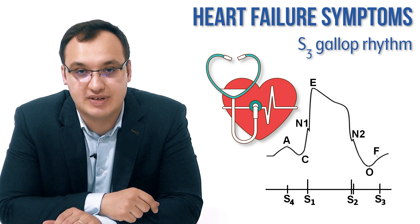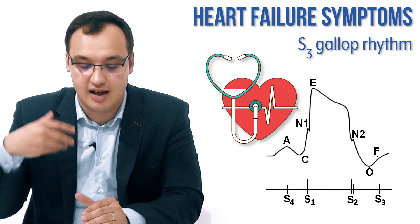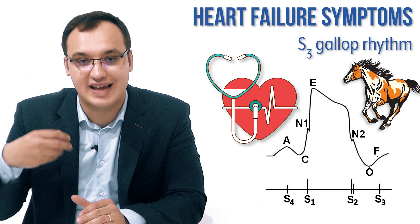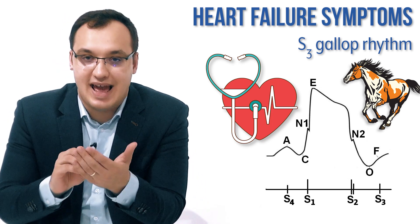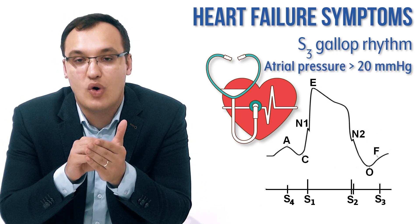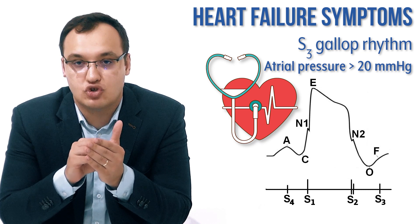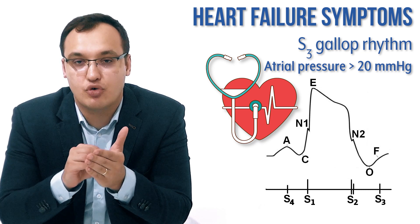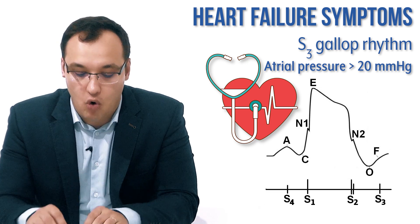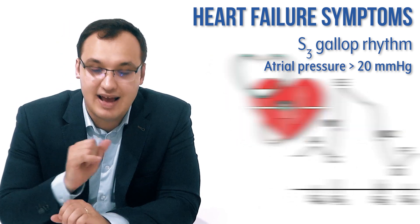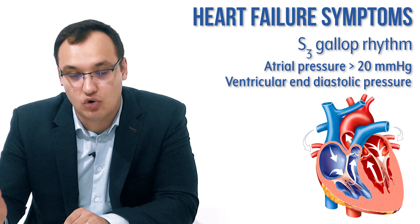S3 gallop rhythm sounds like a horse galloping. This is usually when the atrial pressure is more than 20 millimeter mercury — so 20 mmHg is the atrial pressure, or more than that — or when the ventricular end-diastolic pressure is elevated.